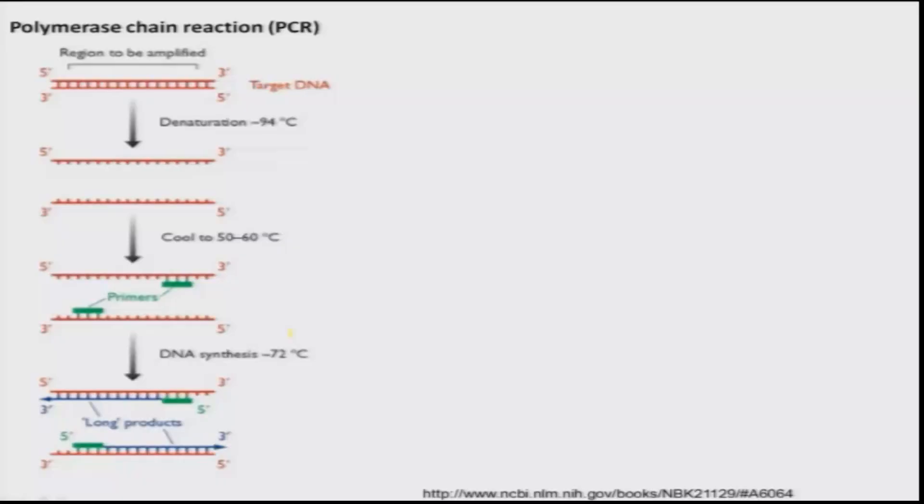So what is polymerase chain reaction? Polymerase means you are making a polymer — simply copying the DNA; a new strand is being made with bases added based on the sequence in the template strand. Why do you call it a chain reaction? Because you are repeating this similar process again and again. How does it really help you?